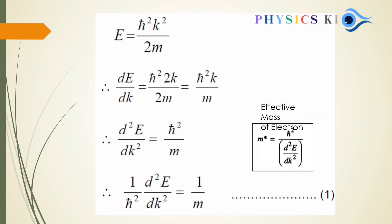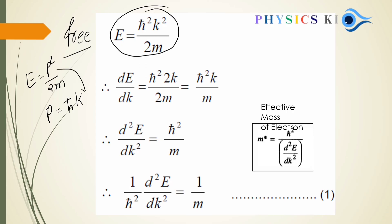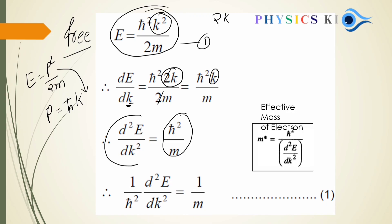Let's derive it. For a free electron, E = P²/2M, and P = ℏK. So E = ℏ²K²/2M. Now differentiate with respect to K: dE/dK gives ℏ²K/M. Taking the second order differentiation, d²E/dK² = ℏ²/M. Multiplying by 1/ℏ², we get: (1/ℏ²)(d²E/dK²) = 1/M. This is equation 1 for a free electron.